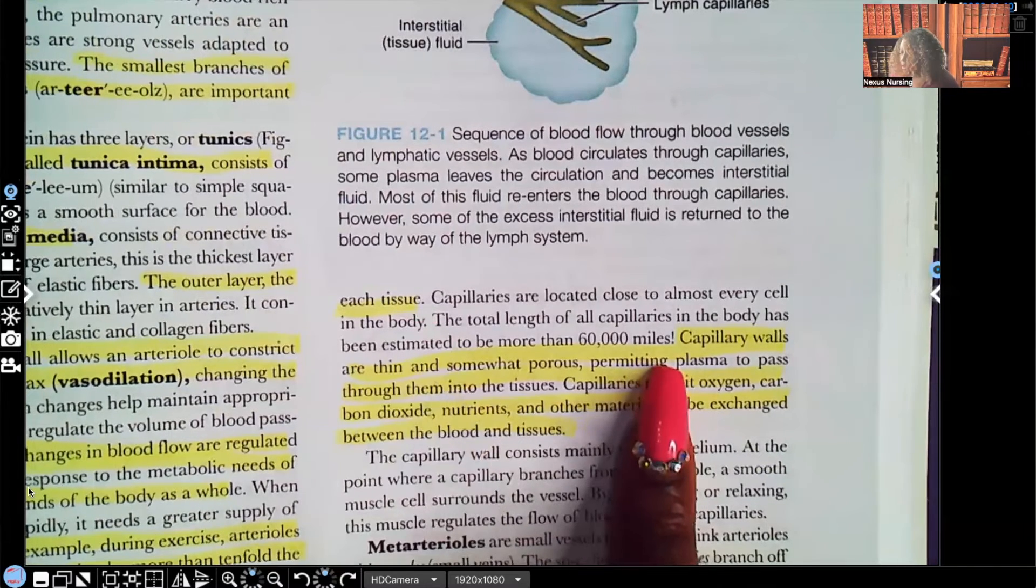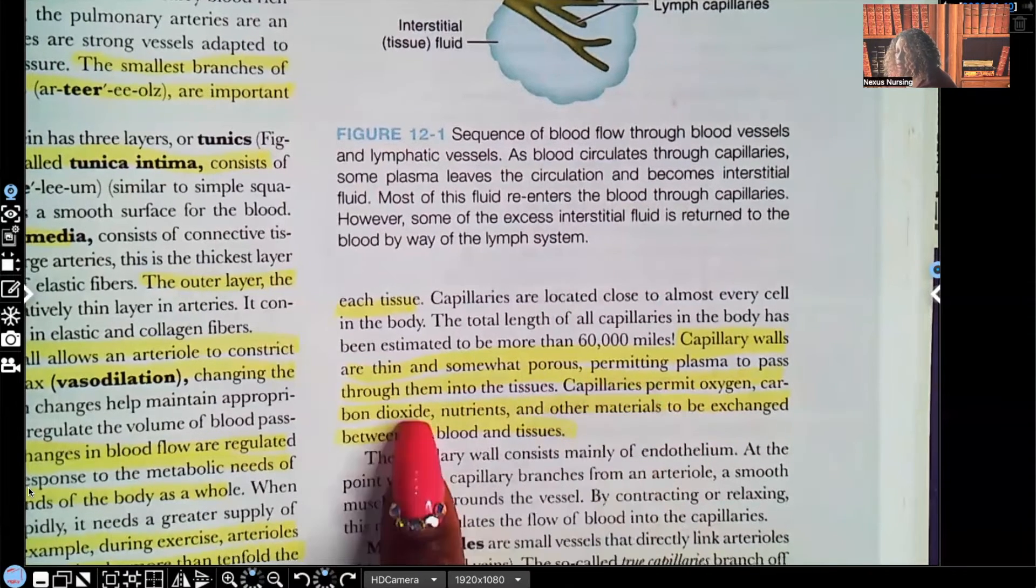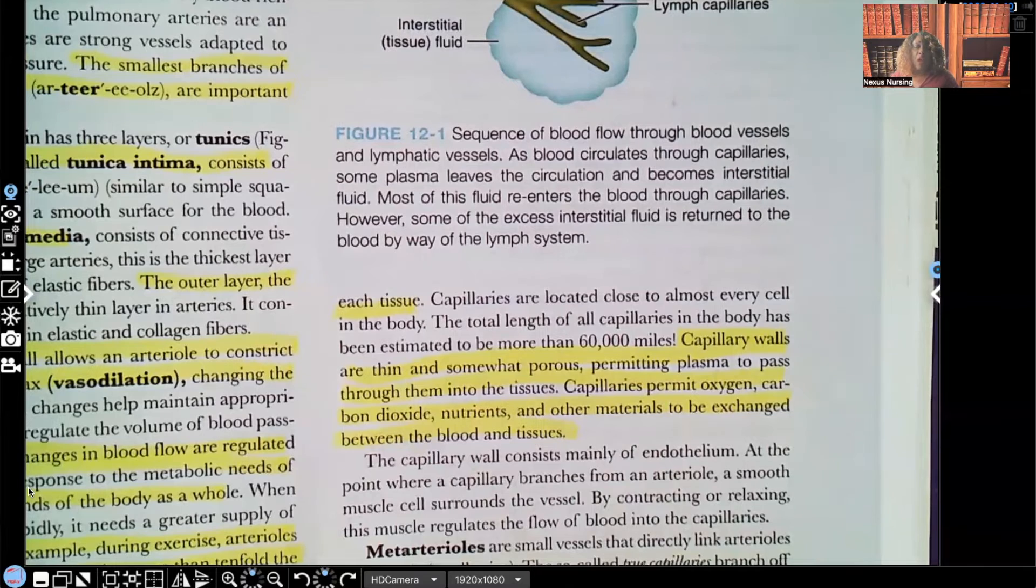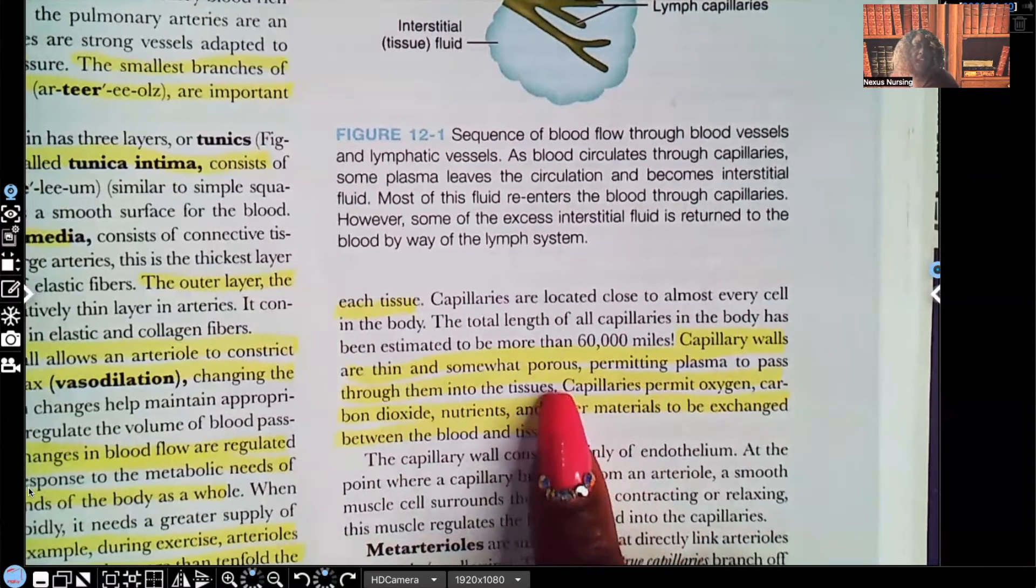Capillary walls, they are thin and somewhat porous. Why do you think they're porous? Take a look. It permits plasma to pass through them into the tissues. Remember plasma? That's what carries, most of you know, the oxygen and minerals that those tissues need. Yeah. So, that's why it's porous. It makes sense because they need to be able to get out.